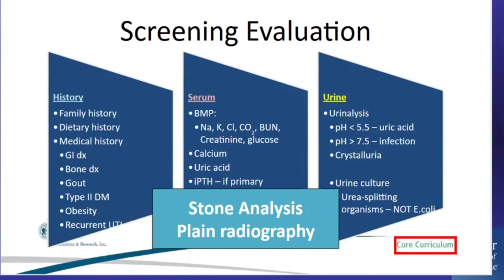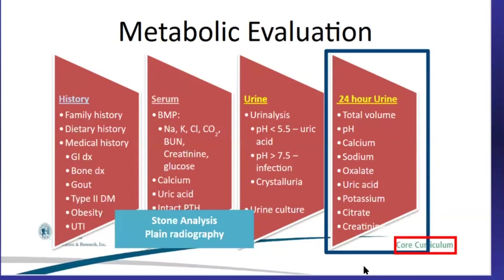A screening evaluation consists of a detailed history — family history, dietary history, and medical history — along with chemistries including calcium and uric acid, a urinalysis and urine culture looking for urea splitters, stone analysis, and imaging. The metabolic evaluation adds to that the 24-hour urine study with all its elements.